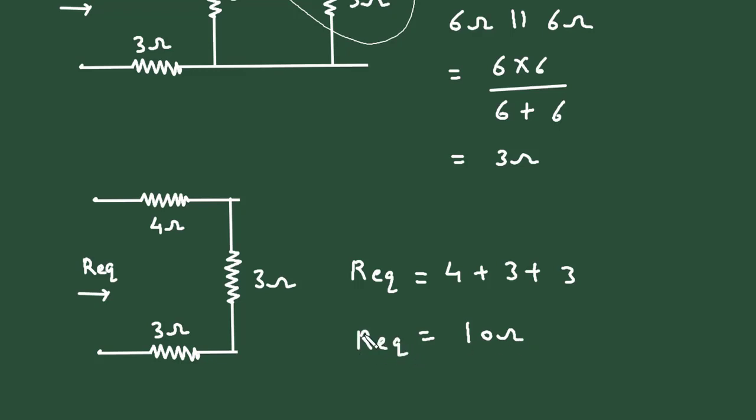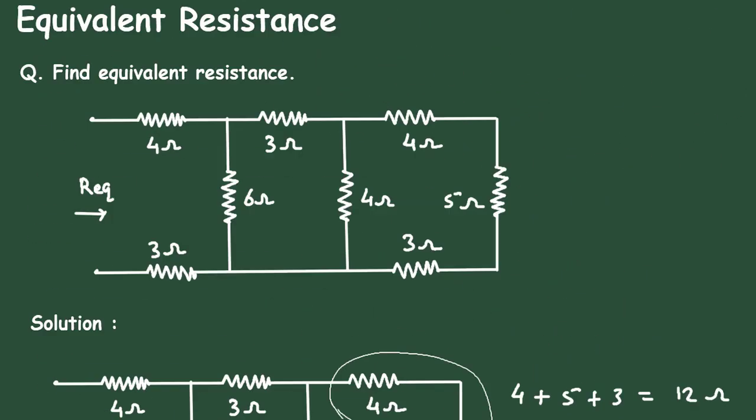So therefore, equivalent resistance is equal to 10 ohm. This is how we can find equivalent resistance of a series and parallel circuit.